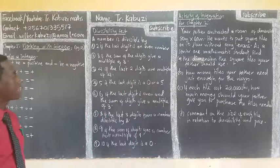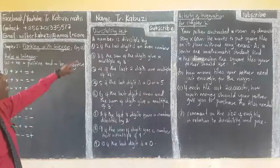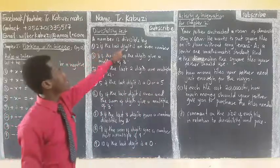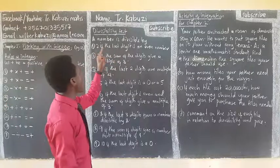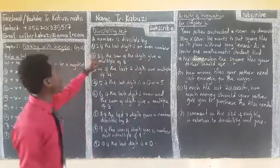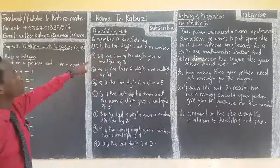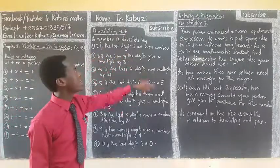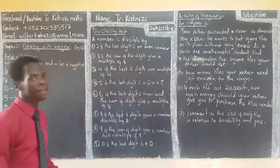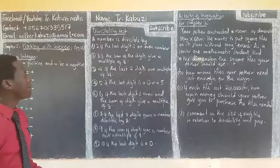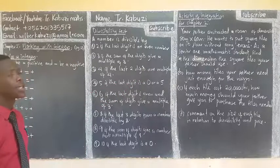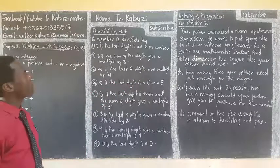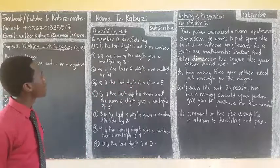Let us also see the divisibility test. A number is divisible by 2 if the last digit is an even number. So if the last digit is an even number, the number is divisible by 2.